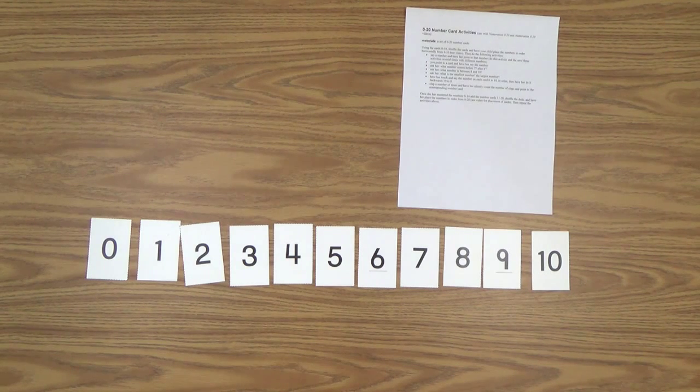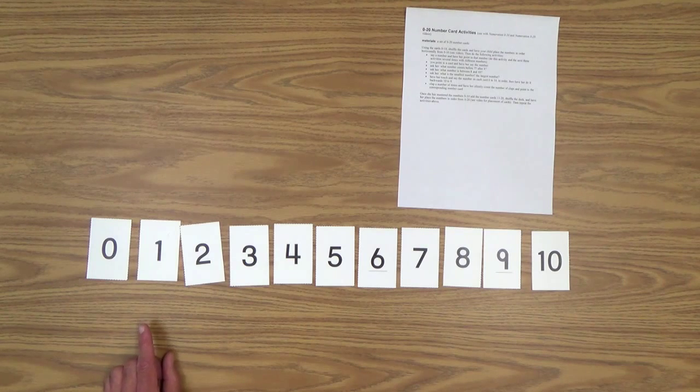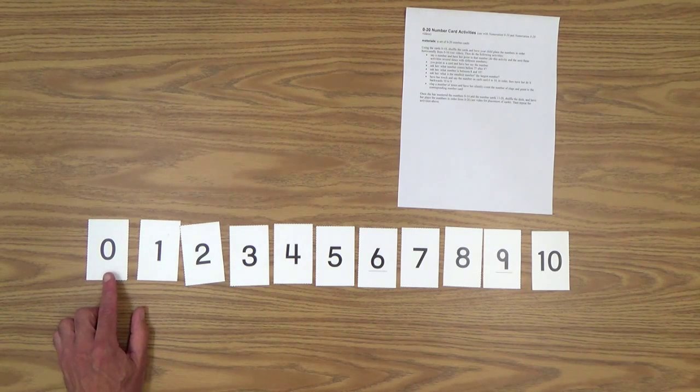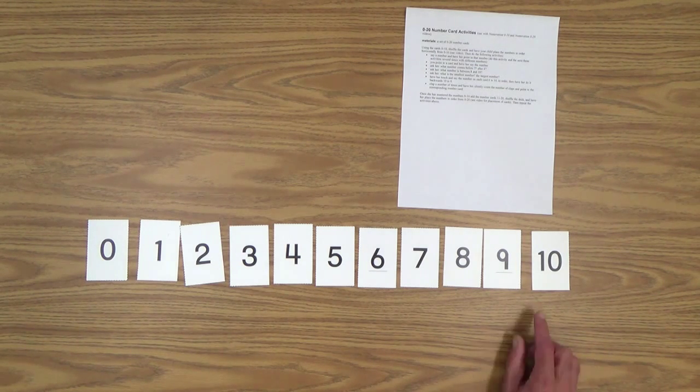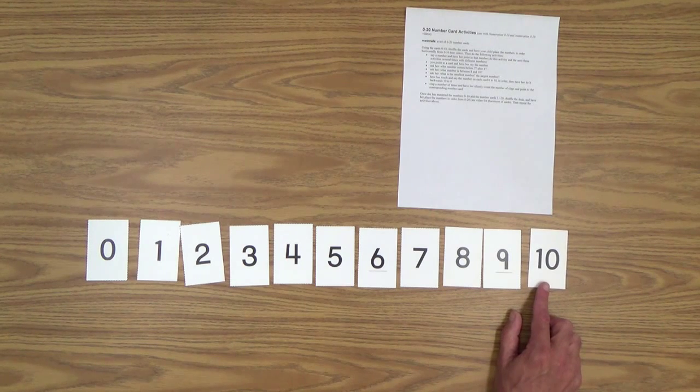A couple other questions you could ask him or her is what is the smallest number you see here. So we're getting into smaller and larger and, hopefully, he will point to zero as the smallest number. And then you could ask, well, what is the largest number? And she would, of course, point to this card and say 10.